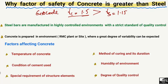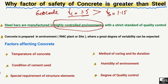Steel bars are manufactured in a highly controlled environment. This is very important to note — steel bars are produced and manufactured in highly controlled environments with strict standards of quality control. This is why we can take a lower value of the factor of safety for the steel bar.